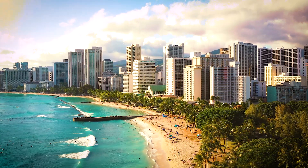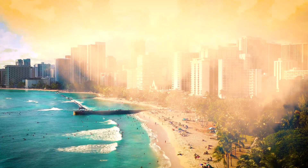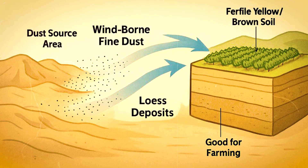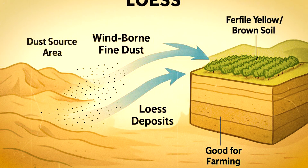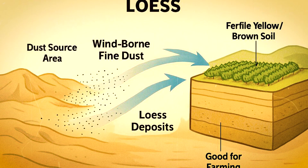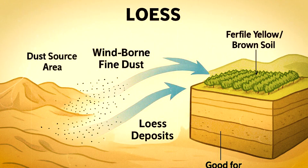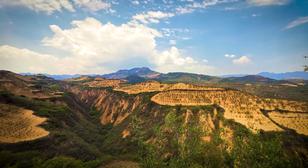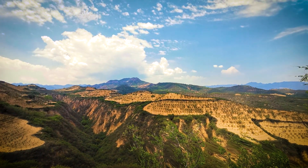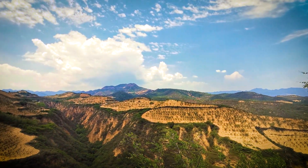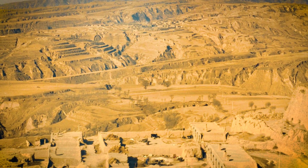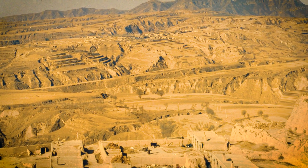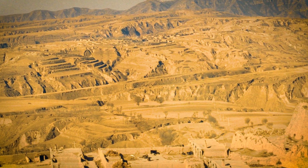Even in places like Hawaii, dust from faraway deserts has been shown to boost the growth of crops such as plantains. In northern China and the central United States, ancient dust deposits known as loess have created some of the world's most fertile farmland. These fine, yellowish soils were formed over thousands of years by windblown dust and have supported agriculture for generations. However, when plants that hold this soil in place are removed or destroyed, those same loess areas can once again become sources of new dust storms.